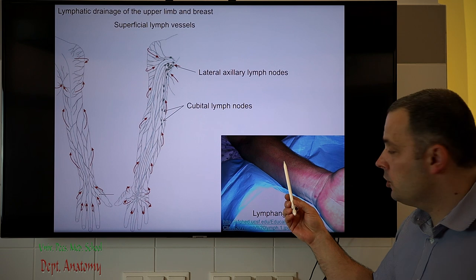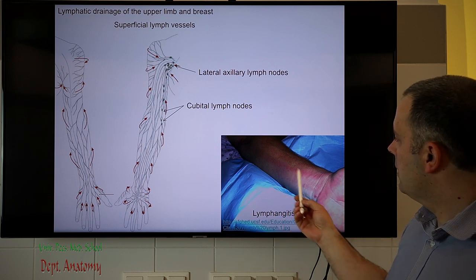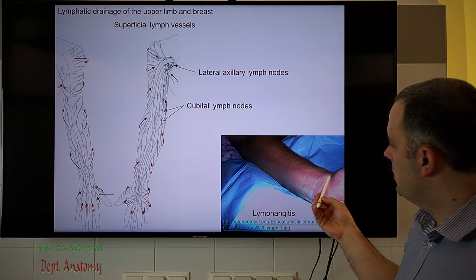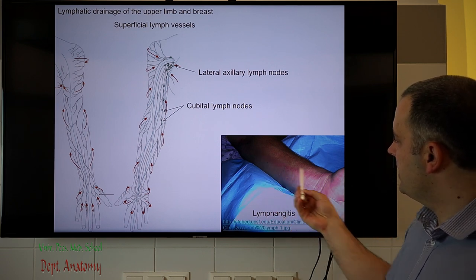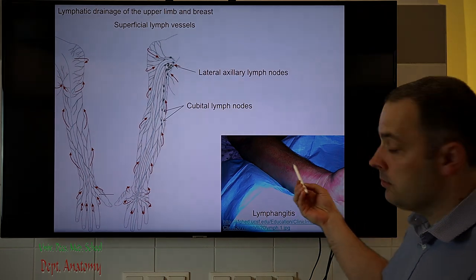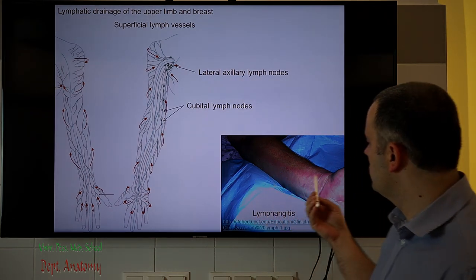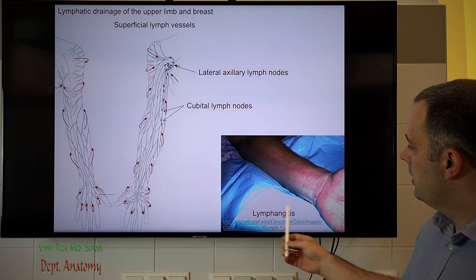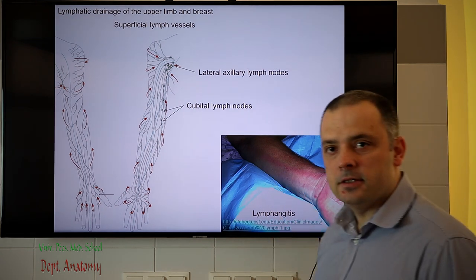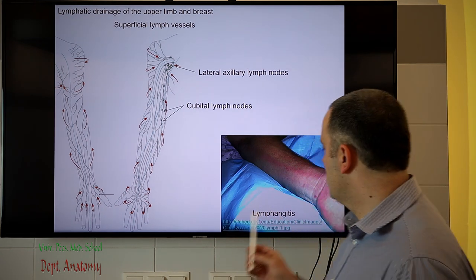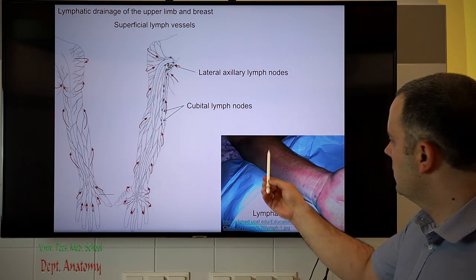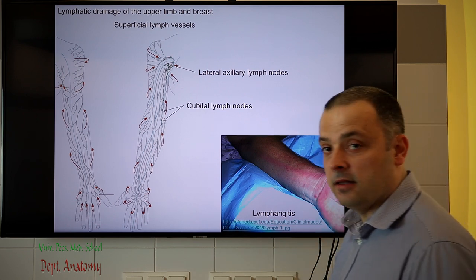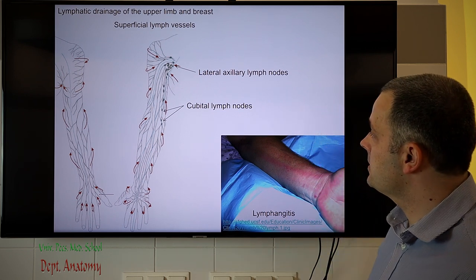This picture shows you lymphangitis — an inflammation in which the lymph vessels cause a reddish color in the skin next to the lymph vessels. This is very common in inflammatory diseases and infected wounds.